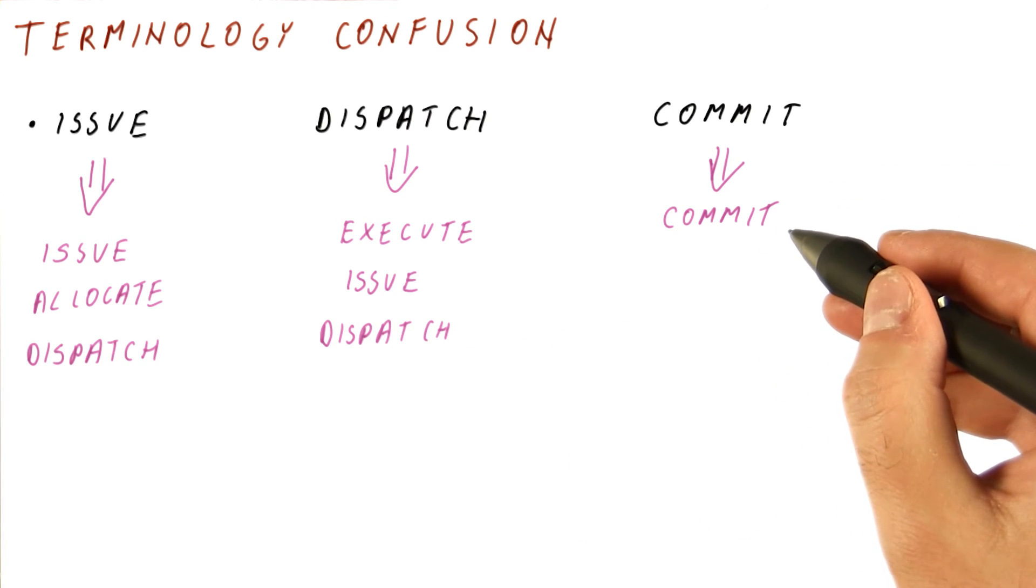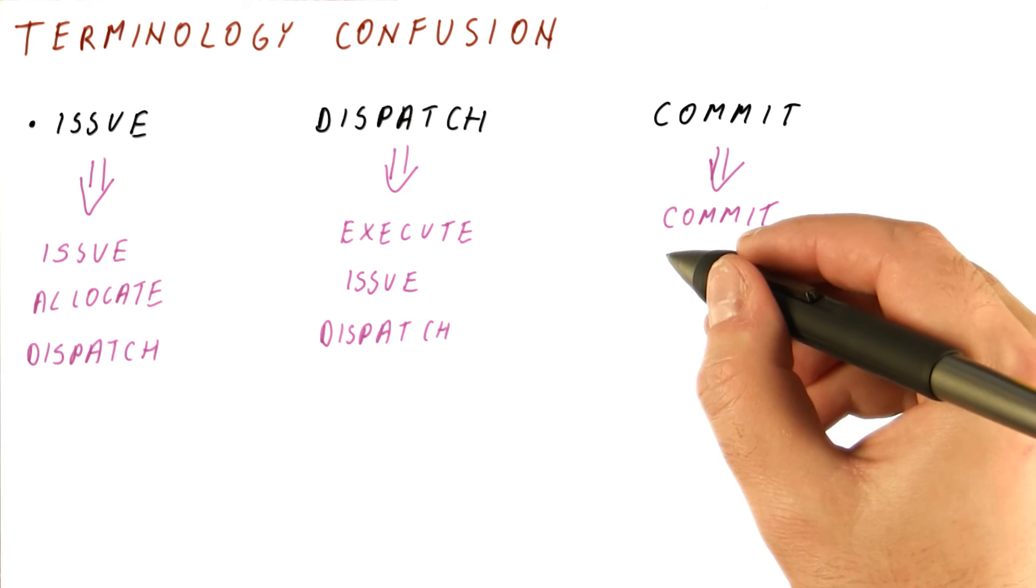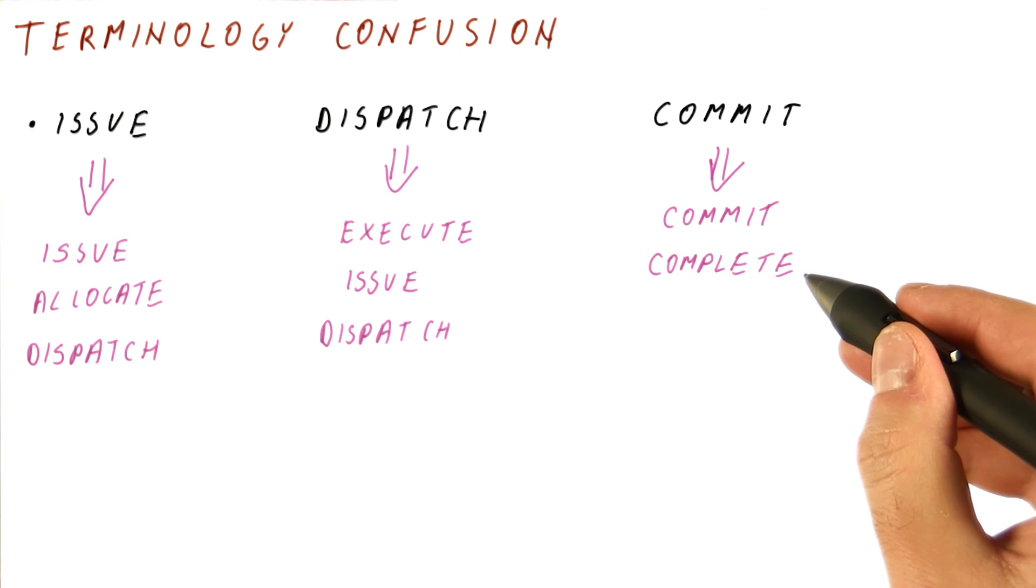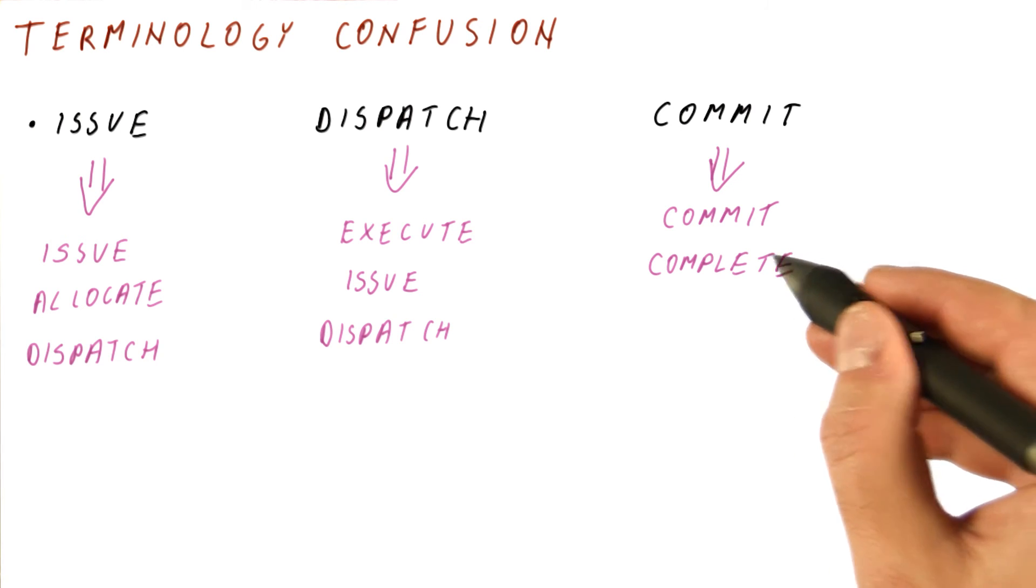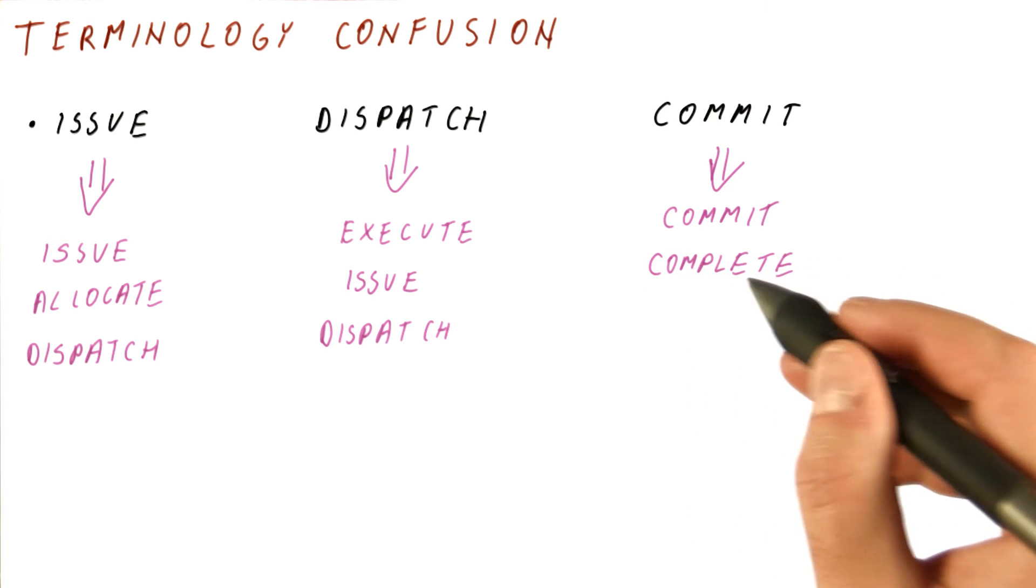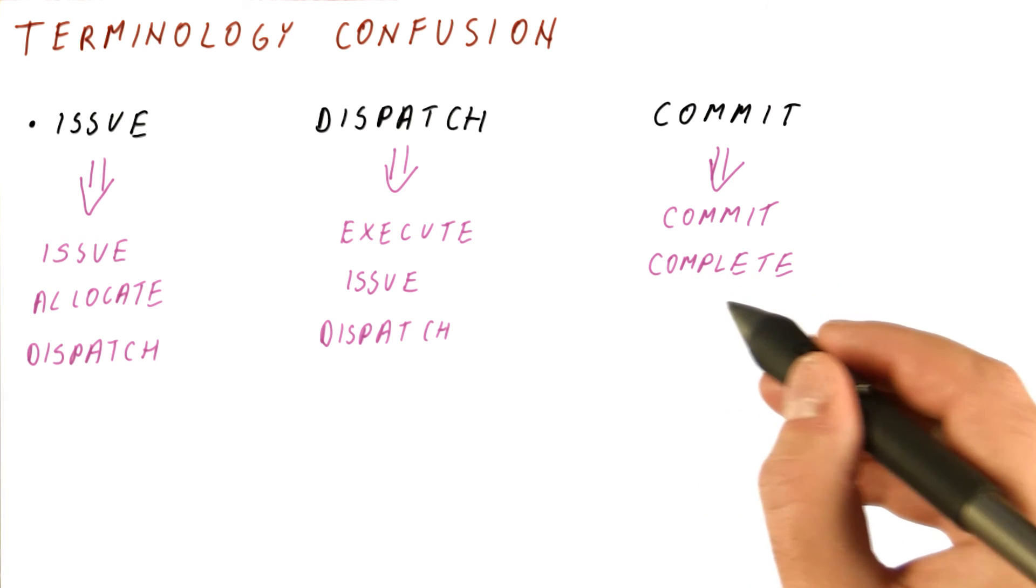And finally, the commit is most often called commit. But sometimes it's been called complete, which introduces some confusion because actually the instruction completes execution well before it commits. It's just that now the term complete would refer to commit if that's the nomenclature that they're using.